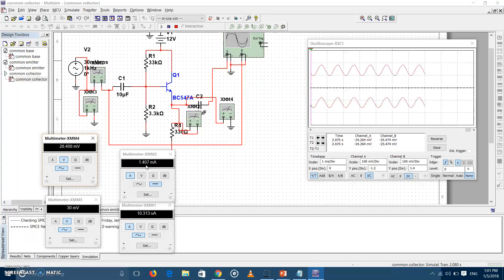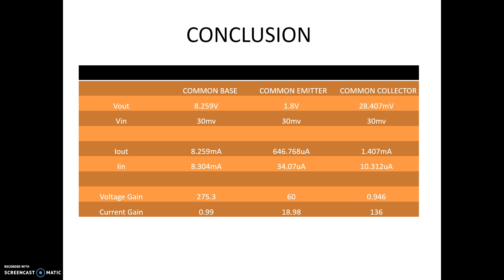The current gain for the common collector circuit is quite high. Going on to the conclusion of the video, we have seen the voltage gain and current gain for all three configurations. The voltage gain for the common base is the maximum among all three. We can conclude that the common base has the maximum voltage gain while its current gain is approximately 1. The common collector circuit has approximately 1 voltage gain and around 136 current gain. The common emitter sits in between common base and common collector in terms of both gains.